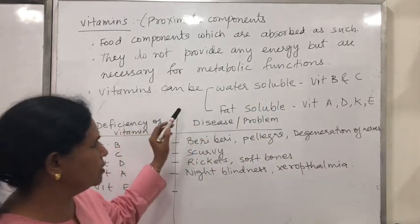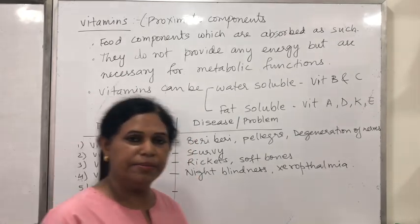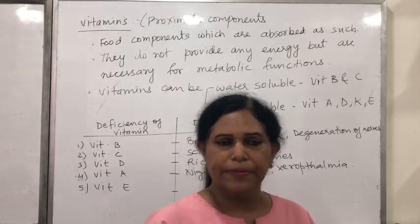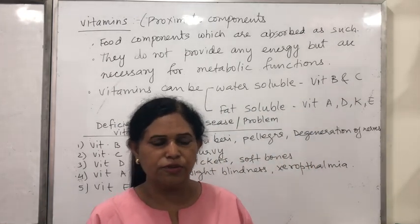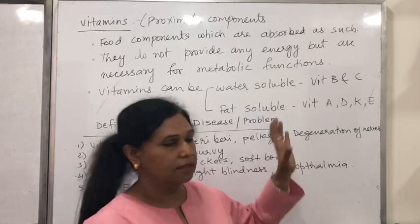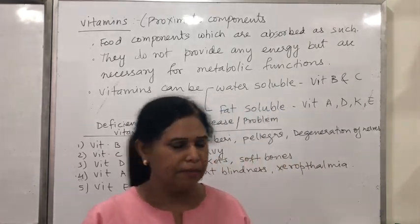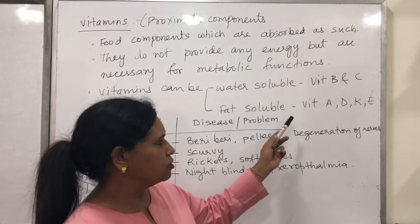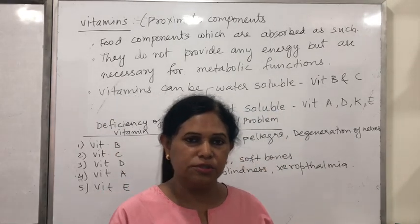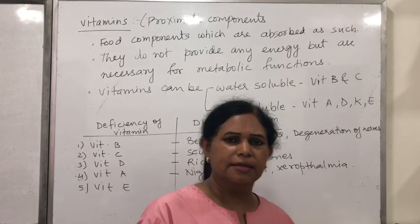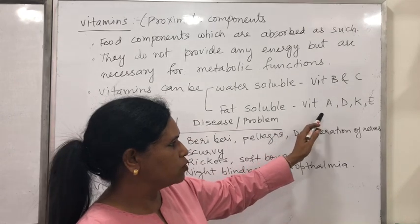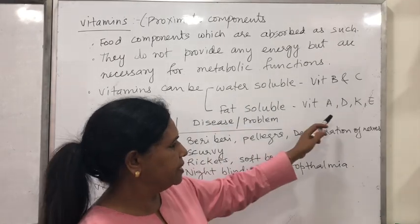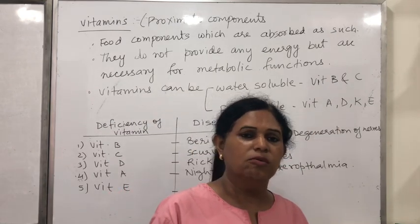Water-soluble vitamins are evaporated during cooking, so they must be consumed daily. Fat-soluble vitamins are present in foods like yellow-colored fruits such as papaya, mango, and carrot for vitamin A; green leafy vegetables for vitamins E and K; milk, meat, liver, and cod liver oil for vitamins A and D.